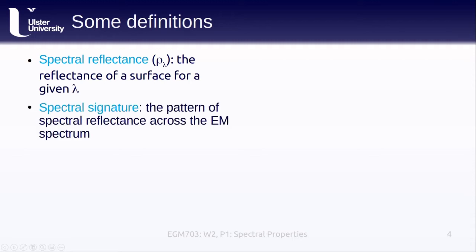Before we keep going, we have to lay out a few definitions. First, the spectral reflectance of an object or surface, rho sub-lambda seen here, is the reflectance of an object for a given wavelength, lambda. This is similar to how we define the spectral radiance or irradiance of an object as the radiance or irradiance for a given wavelength.